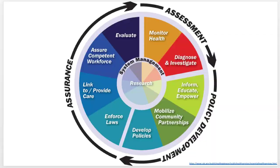Now public health, we can kind of condense down. There are a lot of diagrams that talk about public health and what it actually involves, but there are three biggies: assessment, policy development, and assurance. I like to start with policy development. That's where you figure out what's going on — like, hey, we need to make sure that people know not to eat gross food.